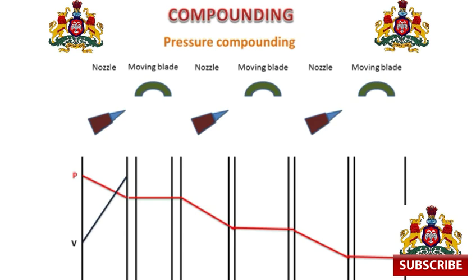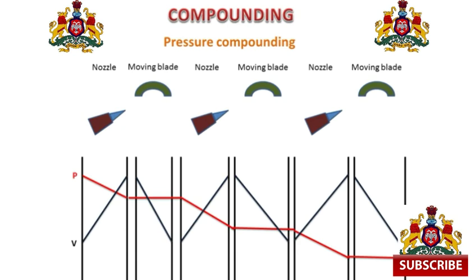For the velocity line in pressure compounding: on the moving blade, velocity decreases due to loss of kinetic energy. In the nozzle, it further increases. On the moving blade, it decreases. In the next nozzle, it increases, and on the moving blade, it decreases. This is the pressure compounding graph for pressure and velocity.